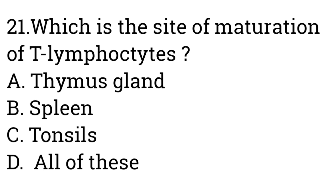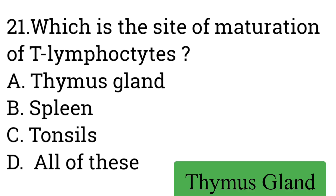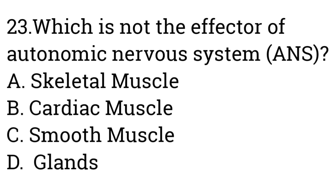Question number twenty-two: Which is the site of maturation of T lymphocytes? Option A: Thymus gland, B: Spleen, C: Tonsils, D: All of the above. Answer is Thymus gland. The primary function of the thymus gland is to produce T lymphocytes; the T lymphocytes mature and become specialized T cells in the thymus.